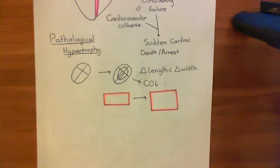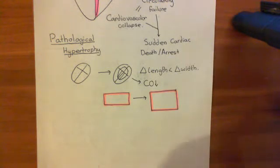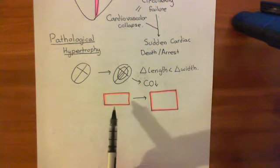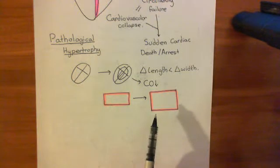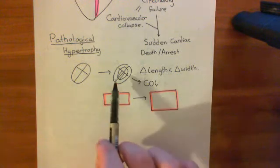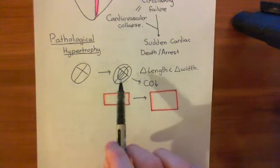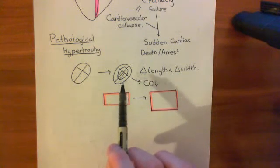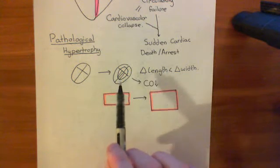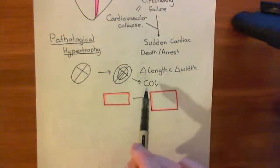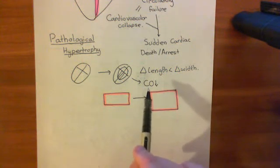We are discussing cardiac hypertrophy, and we're now getting on to pathological hypertrophy. In pathological hypertrophy, the cardiomyocytes of the heart get thicker but don't increase their length that much. This results in the walls of the heart impeding on the actual chambers and reducing the amount of blood the chambers can accommodate, leading to cardiac output going down.